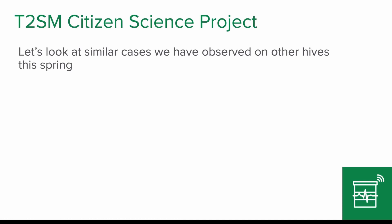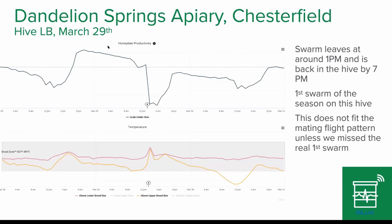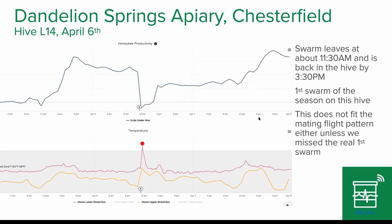Let's look at some other hives and similar events we've seen this spring. Dandelion Springs — that's my place in Chesterfield, Virginia. There's a hive in the backyard where, again, there's a weight drop, a swarming event, and the weight comes back — meaning it could be a mating flight. However, it didn't fit the pattern perfectly because we think this was the first swarm, unless I missed the first one, and that was March 28th — quite early in spring. There is another one on April 6th: again the temperature peak, weight drop, and the weight comes back. This one leaves at 11:30 AM and is back in the hive by 3:30, but again it was the first one of the season, so it may not have been a mating flight but something else.